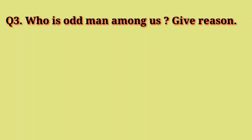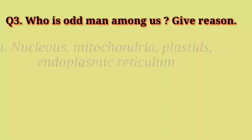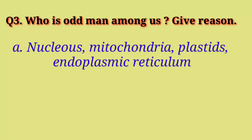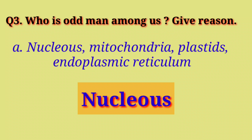Question 3: Who is the odd man among us? Give reason. A. Nucleus, Mitochondria, Plastids, Endoplasmic Reticulum. Answer: Nucleus. Nucleus is present within the nucleus membrane. Various Mitochondria, Plastids, and Endoplasmic Reticulum are organelles present in the cell cytoplasm.